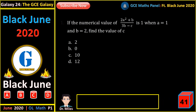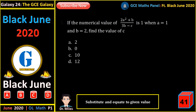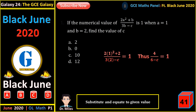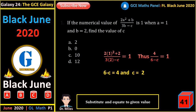If the numerical value of this expression is 1 when A is 1 and B is 2, find the value of C. We substitute and equate to the given value. This gives us 4 on (6 minus C) equals 1. So 6 minus C equals 4, giving us C to be 2.